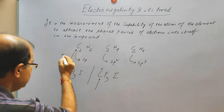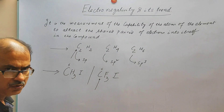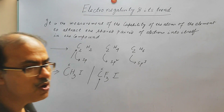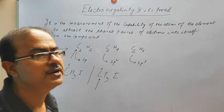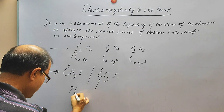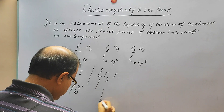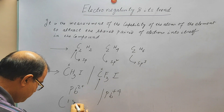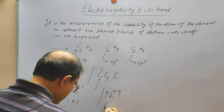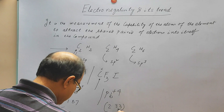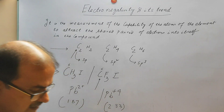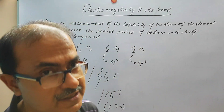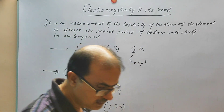Another example that gives more insight into how electronegativity is influenced by different factors: consider Pb²⁺ and Pb⁴⁺. The electronegativity of Pb²⁺ is 1.8, whereas for Pb⁴⁺ it is 2.3. So you can see that when we increase the oxidation number of the element, the electronegativity increases.